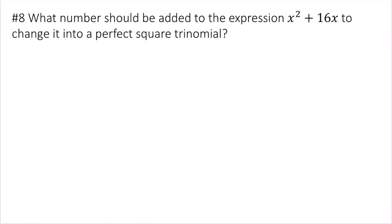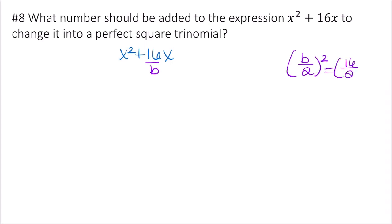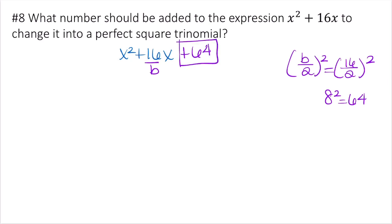This problem asks what number should be added to x squared plus 16x to make it a perfect square trinomial. Use the formula b over 2 squared. Here b equals 16, so 16 over 2 is 8, and 8 squared is 64. So add 64 to create the perfect square trinomial.